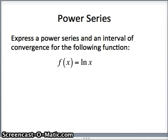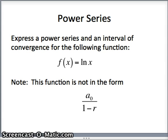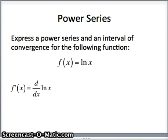This looks a little different than the other problems we've done because it's not in the form a₀ over 1 minus r. That form gave us a geometric series, which converges when the common ratio is between negative 1 and 1, helping us identify the interval of convergence and construct the power series. But log x is not in that form — however, a version of log x is, namely the derivative. The derivative of log x is 1 over x. Can we make 1 over x look like a₀ over 1 minus r?